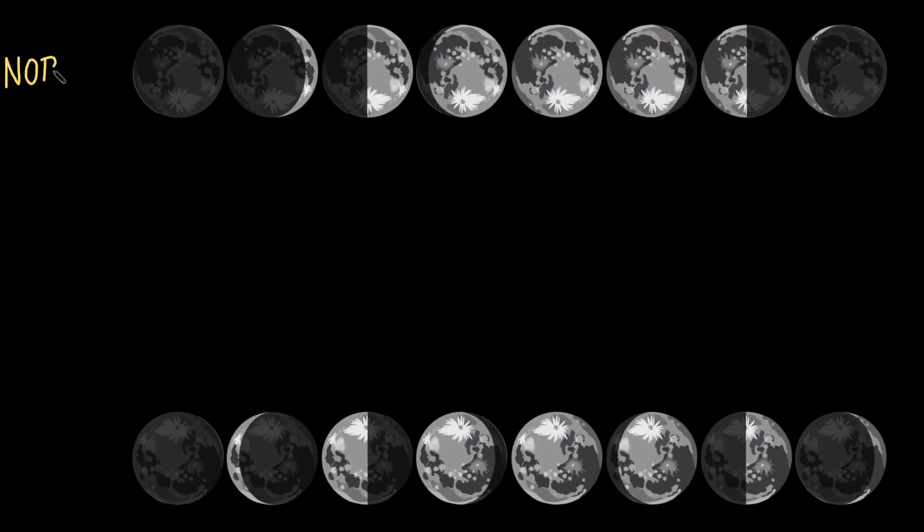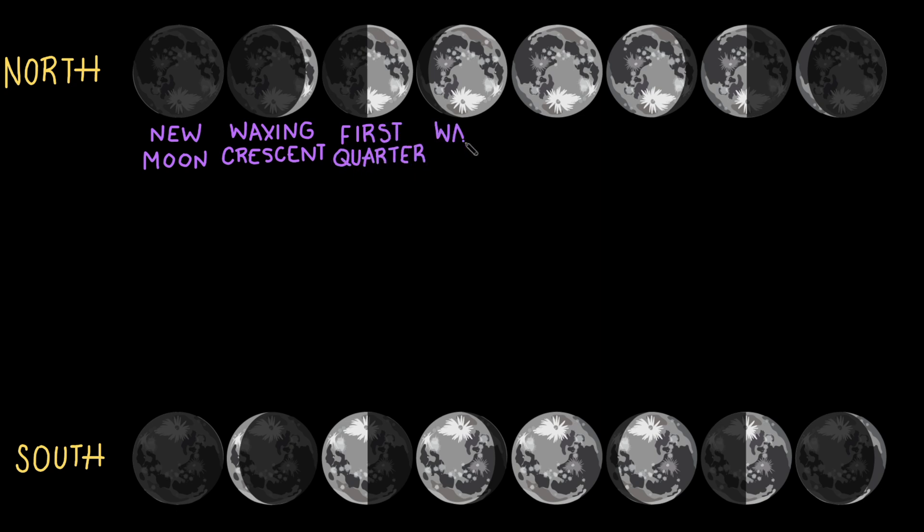We also see the moon's phases differently. And again, the difference is that the moon is flipped. The phases that appear on the right side of the moon in the northern hemisphere appear on the left in the southern hemisphere. Starting with the new moon, the phases in both hemispheres go from waxing crescent, to first quarter, to waxing gibbous, to full moon, to waning gibbous, to third quarter, to waning crescent, and then back to new moon.